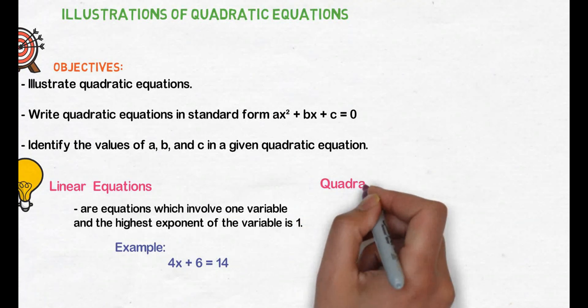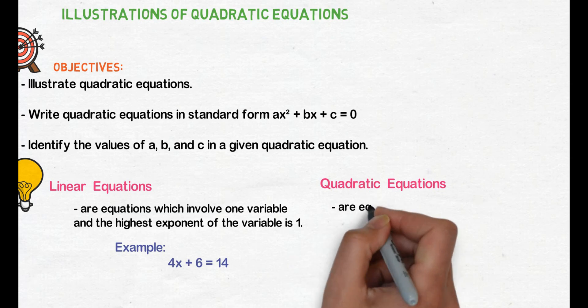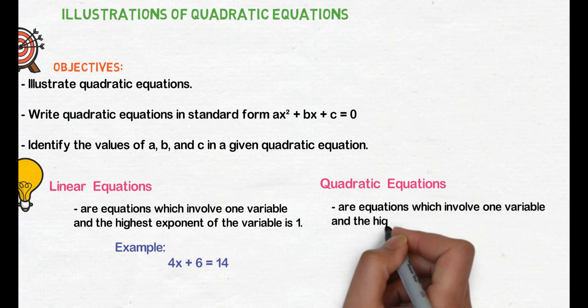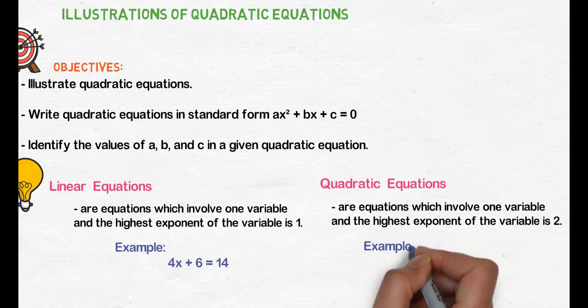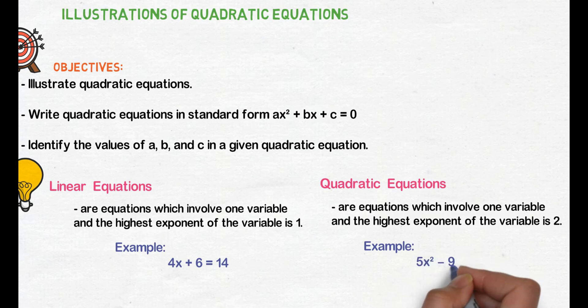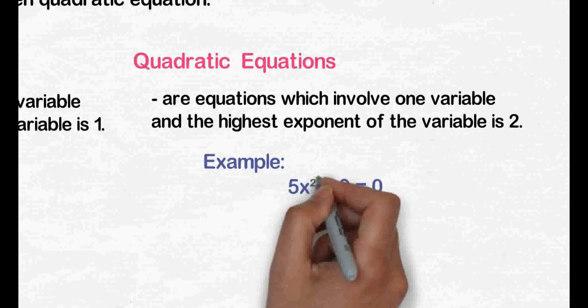Next, let's define what a quadratic equation is. Quadratic equations are equations which involve one variable, and the highest exponent of the variable is 2. Example: 5x squared minus 9 equals 0. Similar to a linear equation, there is also one variable in a quadratic equation, which is x. The highest exponent of the variable in a quadratic equation is 2. In our example, we can see the exponent 2 on the variable x.